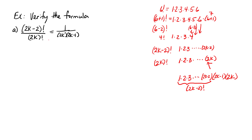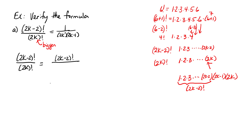When you see an expression like this, expand the bigger factorial until you can see the smaller one. So (2k-2) factorial over (2k) factorial equals (2k-2) factorial over [(2k-2) factorial times (2k-1) times 2k]. The (2k-2) factorials divide out to leave 1 over [(2k-1) times 2k], which is what we were looking for.